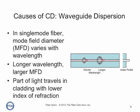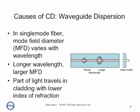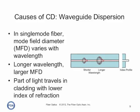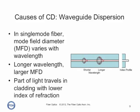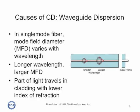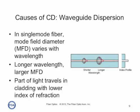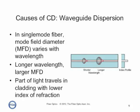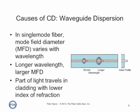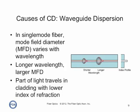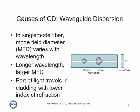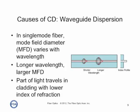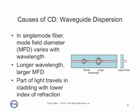Waveguide dispersion is a bit more complex. In single mode fiber, the wavelength of the light is not that much bigger than the core of the fiber, and the result is that light traveling down the fiber actually travels in an area that exceeds the diameter of the core — the area we call mode field diameter. The mode field diameter is a function of the wavelength of the light, with longer wavelengths traveling in a larger mode field diameter. Part of the light travels in the geometric core, and part in the cladding. Since the core is made of higher index of refraction glass than the cladding, the light in the cladding travels faster. Longer wavelengths have larger mode field diameters, so they suffer more material dispersion.